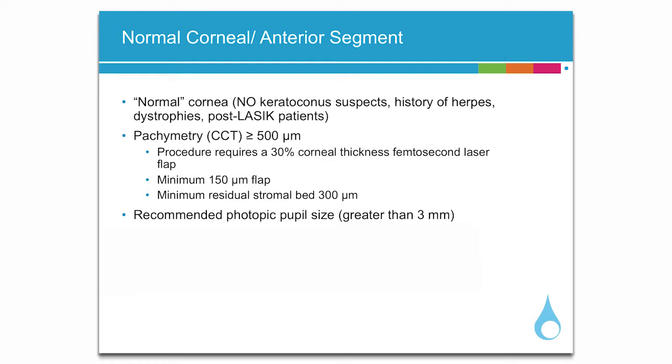Pachymetry CCT should be greater than or equal to 500 microns, and the recommended photopic pupil size should be a minimum of three millimeters. Pay attention to eliminate patients with cataracts or other diseases that may compromise vision.